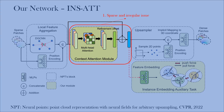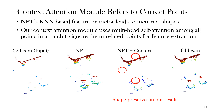First, I want to introduce our context attention module. Previous methods rely solely on the KNN-based feature extractor, which often leads to incorrect shapes in sparse areas. To mitigate this, our context attention module employs multi-head self-attention across all points. As seen in example 3, our method achieves a better upsampling shape that is close to the ground truth.